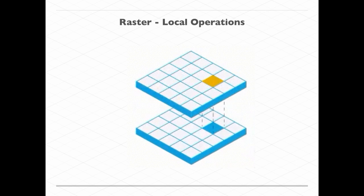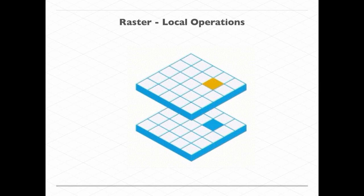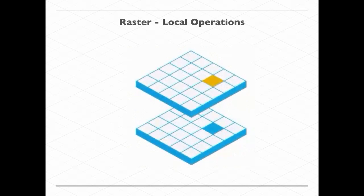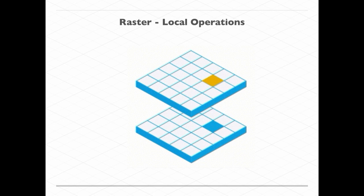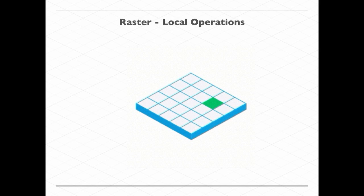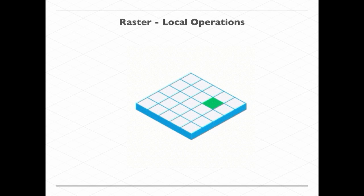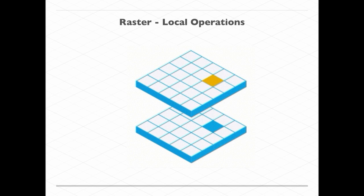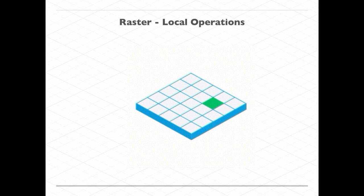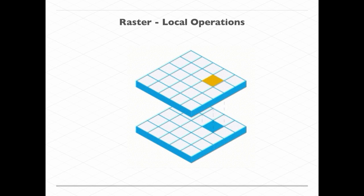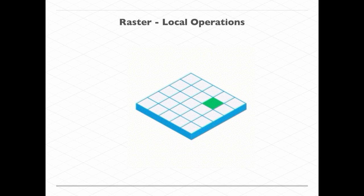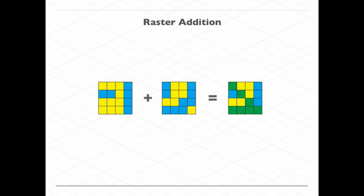Raster operations are a little simpler. The term is 'raster is faster, but vector is more corrector.' It's faster because it's just a straight-up operation — take one cell, take another cell, combine them, done. Here's a local operation in map algebra: just take each cell and add them together. Blue and yellow equals green. You can produce transformations and combine raster data into other raster data.